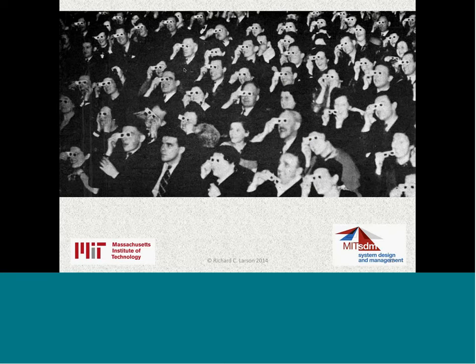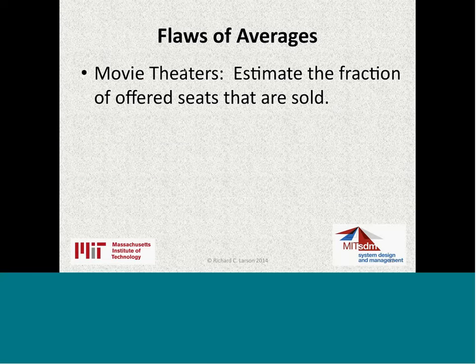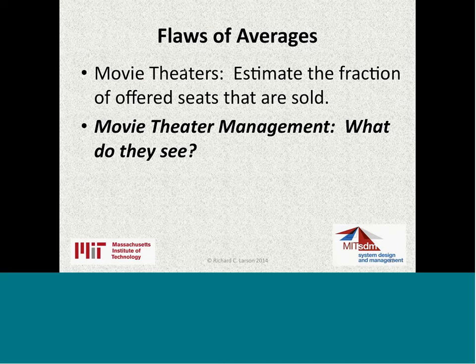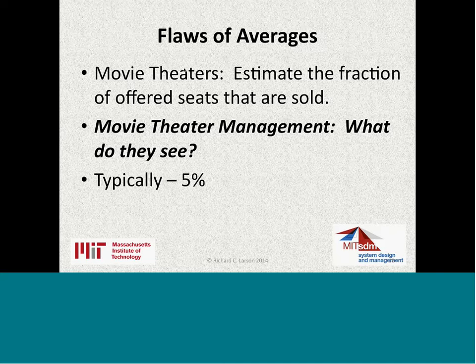Here's another example of flaws of averages — movie theaters. When you go to a movie theater, you typically see it's 50, 75 percent filled. Sometimes first-run movies sell out. If I polled our 900-plus attendees on their estimate of how filled movie theaters are on average, you'd probably say 60, 70, 80 percent. What does management see? At one major U.S. movie theater chain I consulted for, only 5 percent of the seats offered for sale are actually sold. How can this be? There's a selection bias.